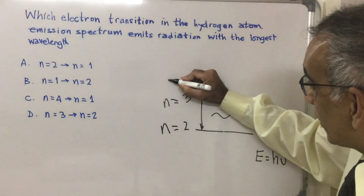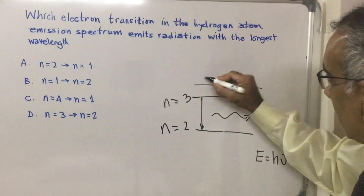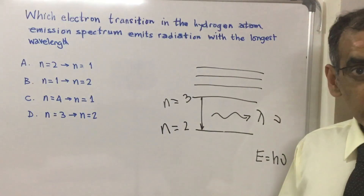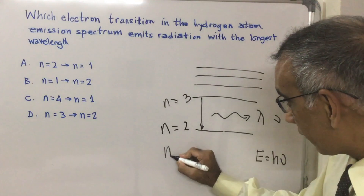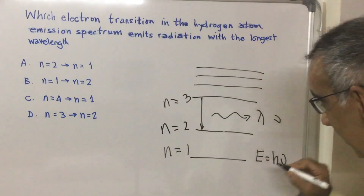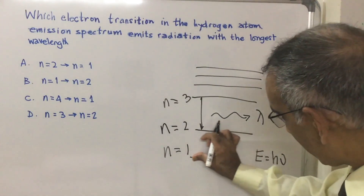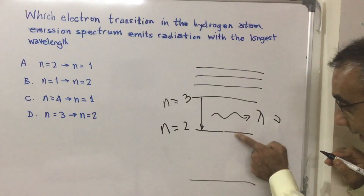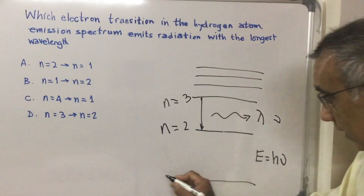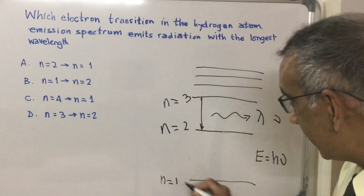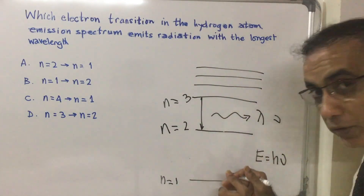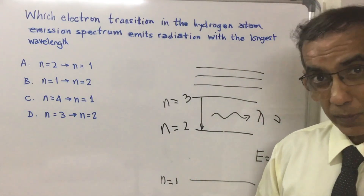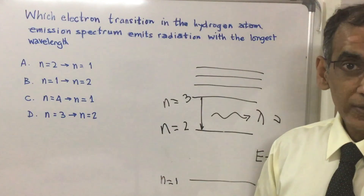You get all the lines of the visible spectrum from transitions from higher levels — n=4, n=5, n=6. But you also need to know that when transitions are from higher levels down to the ground state, n=1, each energy level gap gets smaller as you go up. Transitions from higher levels to n=1 also happen, but they don't give you any lines you can see in the visible spectrum through a diffraction grating.